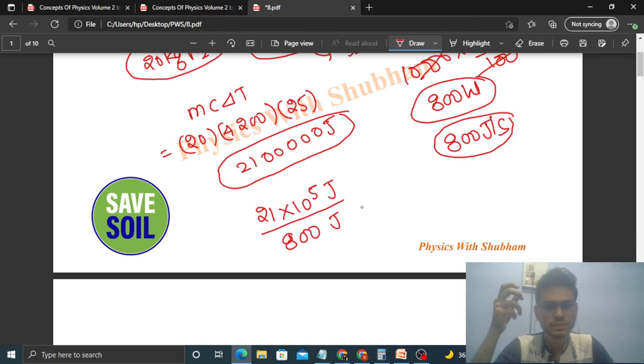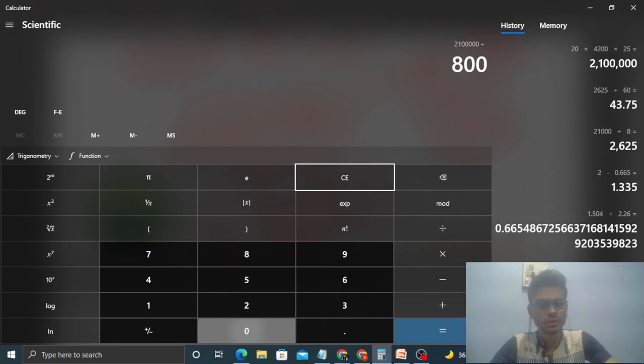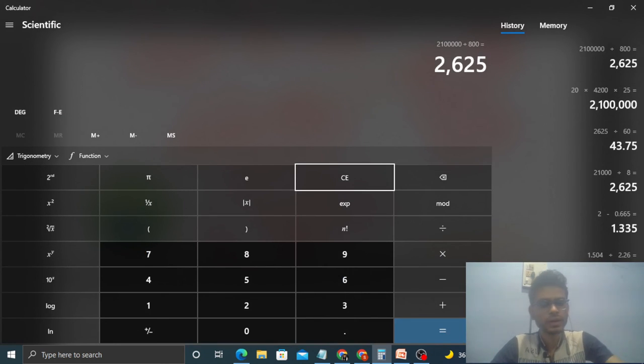Joule per second, so this will be in seconds. So let's see how much it comes. Divided by 800, so this will be in seconds.